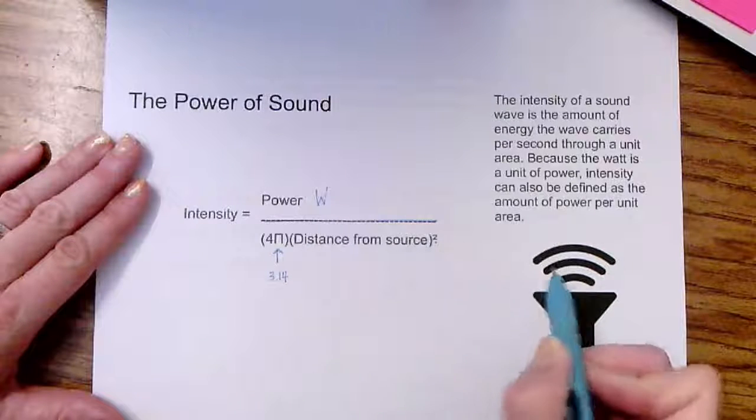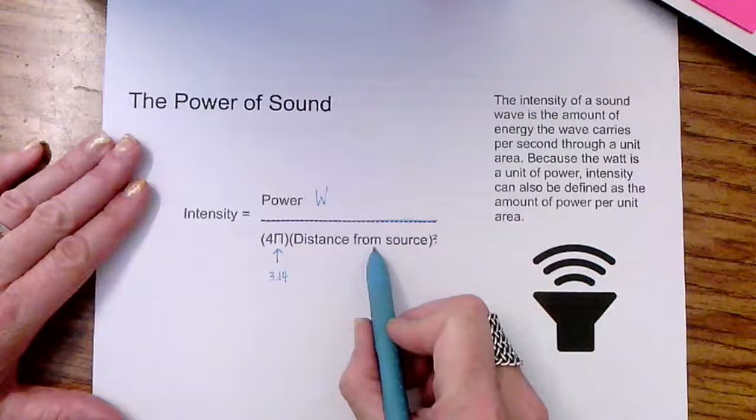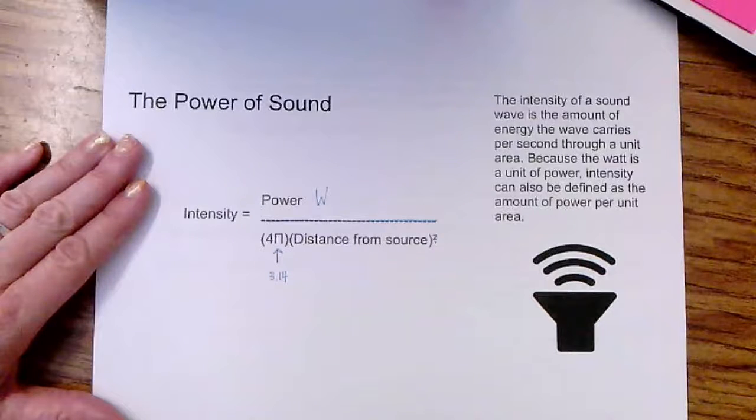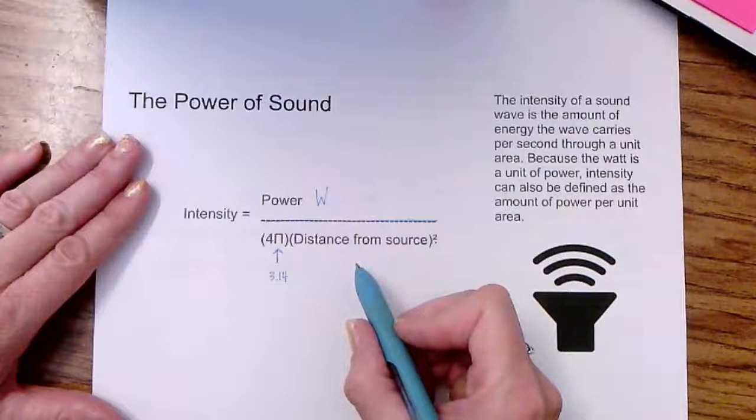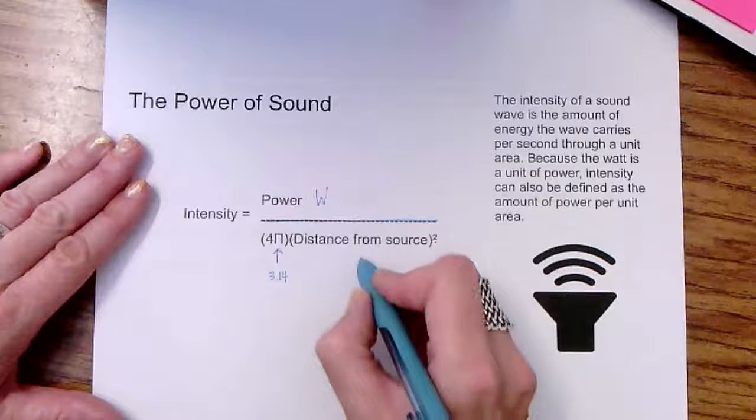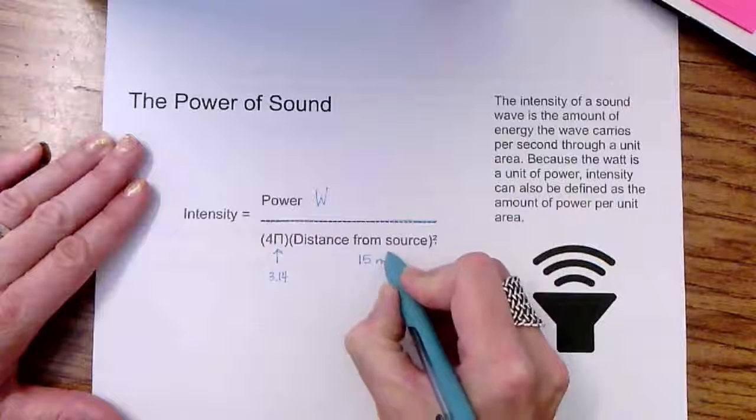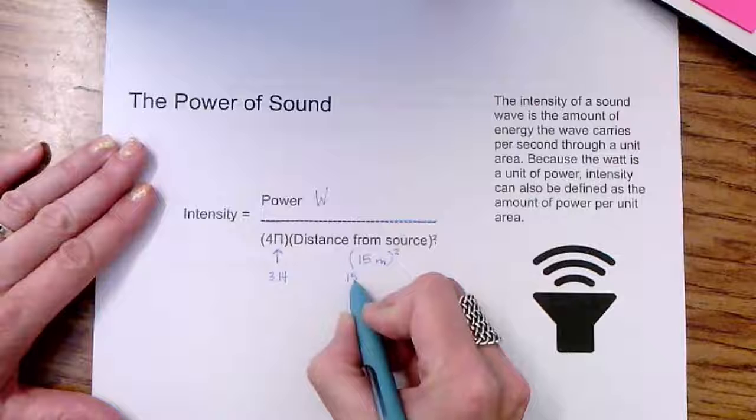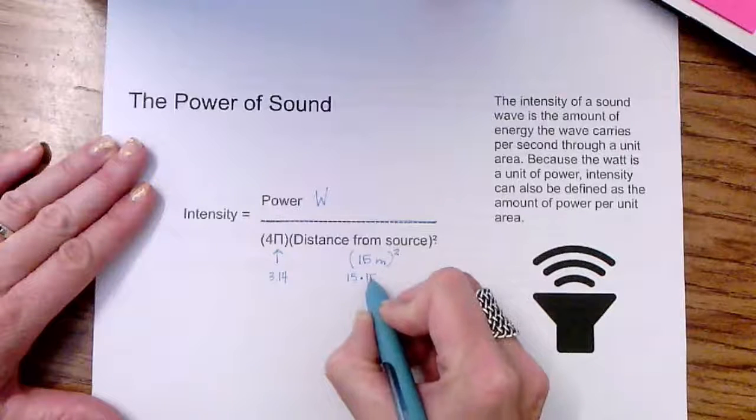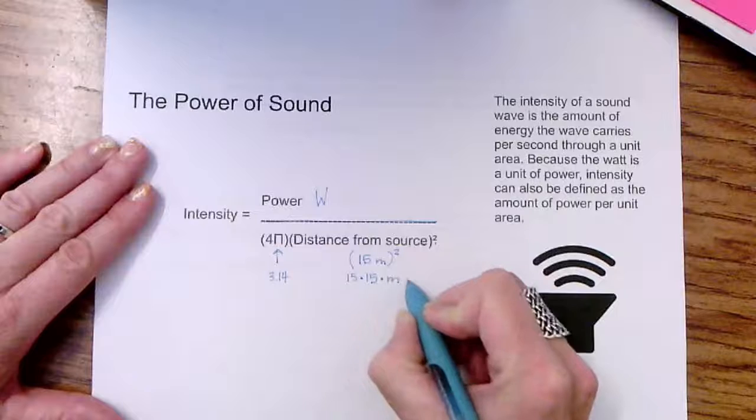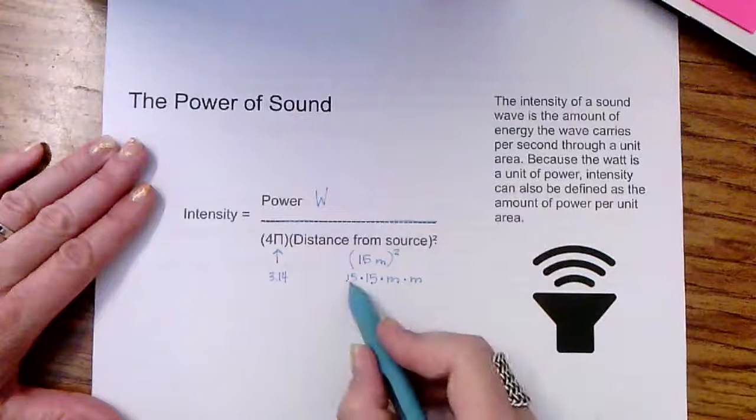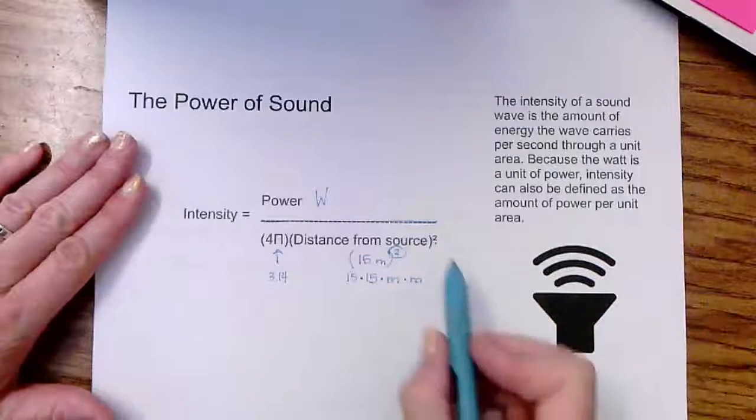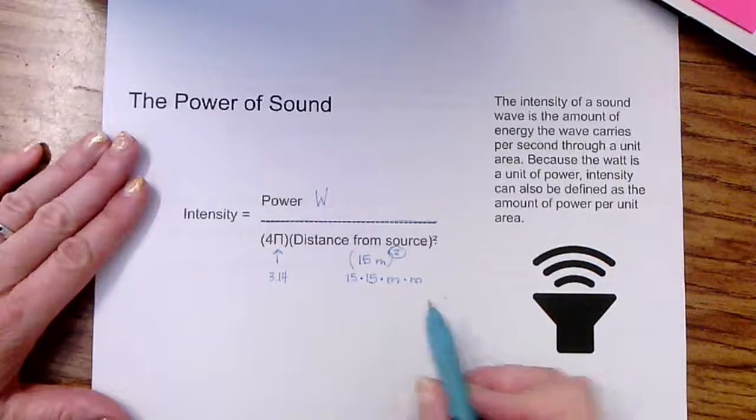For distance from source, I want to remind you of something. This means you are measuring from the actual source making the sound away from it. And because we're in science class, we're going to use the metric system. For example, if my distance from the source is 15 meters and it is squared, that is the same as saying 15 times itself times meter times itself, to the power of 2. Now, we're going to do an example of this on our next slide.